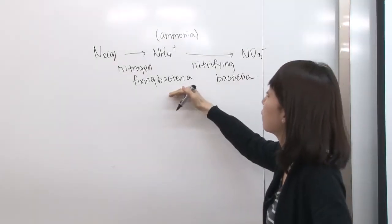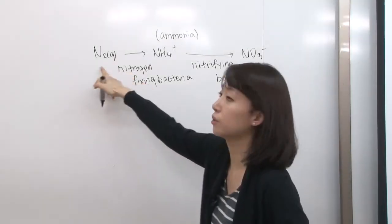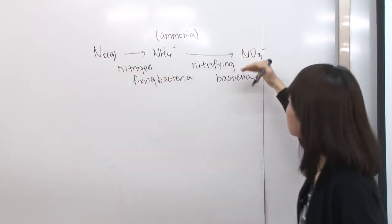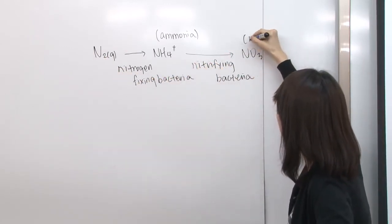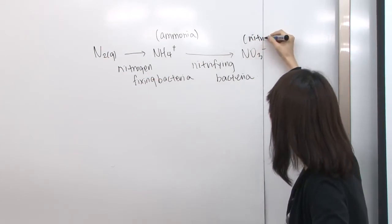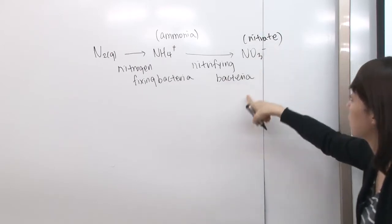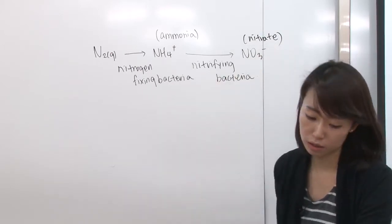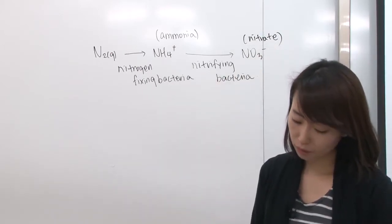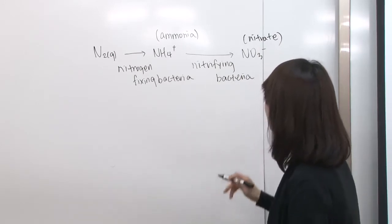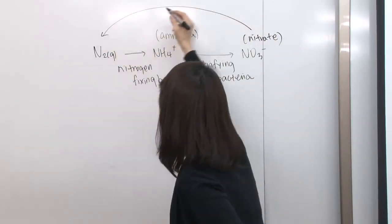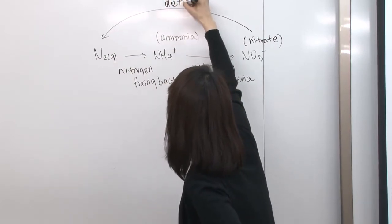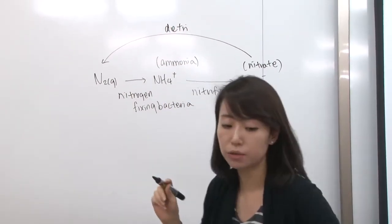This is the bacteria that fixes nitrogen gas from the air. This is the bacteria that actually converts ammonia to nitrate — that's why the name is nitrifying bacteria. When you want to convert this back to N2, you have another bacteria for that called denitrifying bacteria.